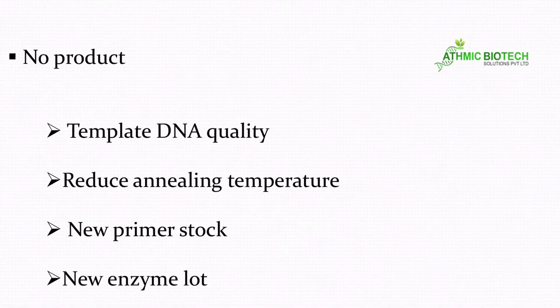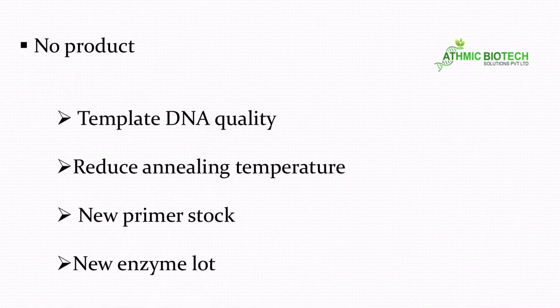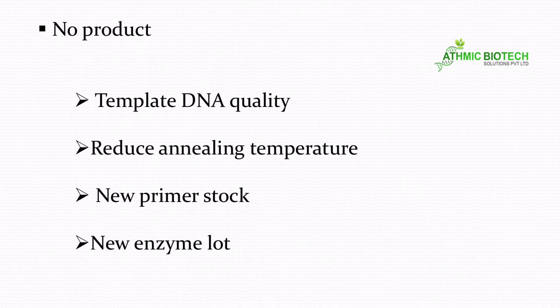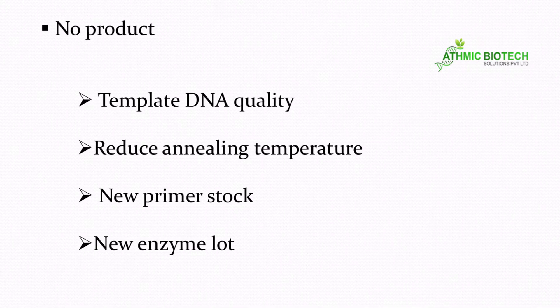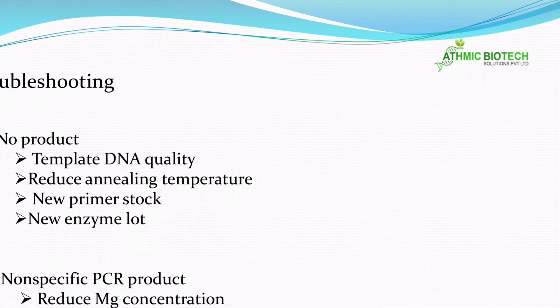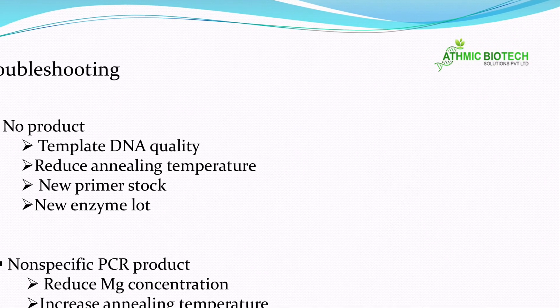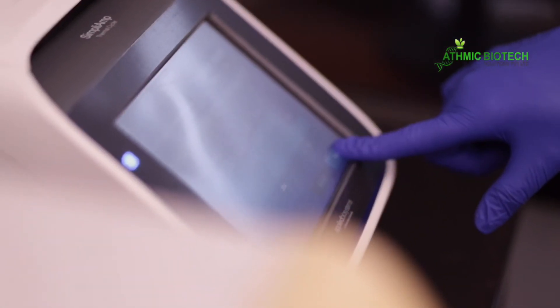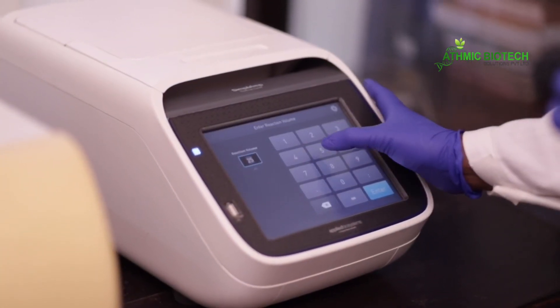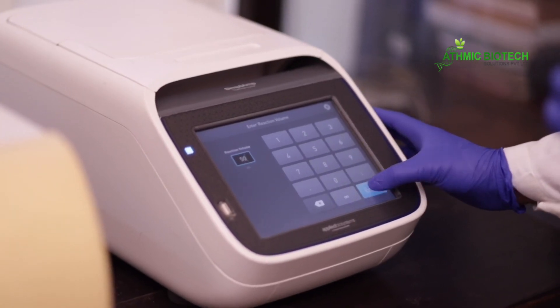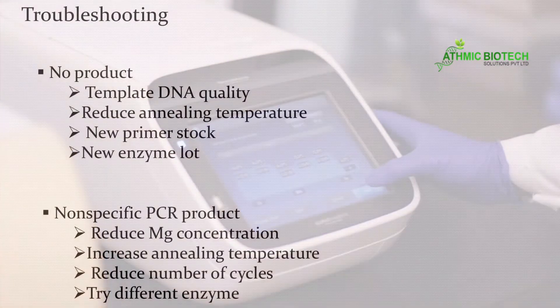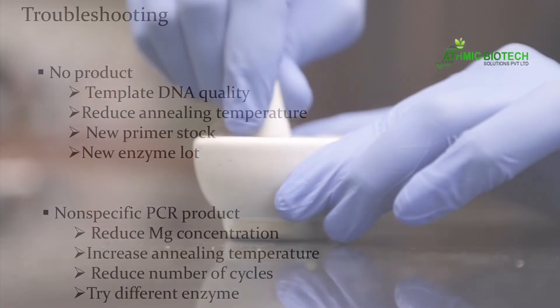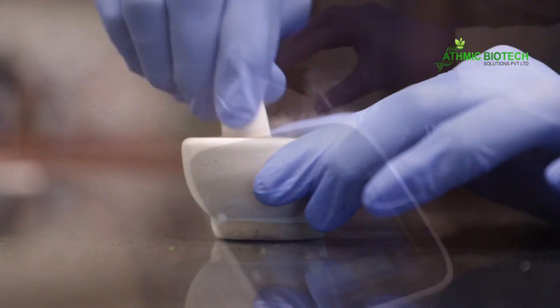Second thing you have to check - try to reduce your annealing temperature. Sometimes it may be due to your primer error. Try with a new primer stock. And sometimes the Taq polymerase activity may be lost. The repeated freeze-thaw cycles may cause Taq polymerase activity loss. So you have to aliquot it at minus 10 to minus 80, so that will reduce the repeated freeze-thaw cycles. Try with a new enzyme lot.